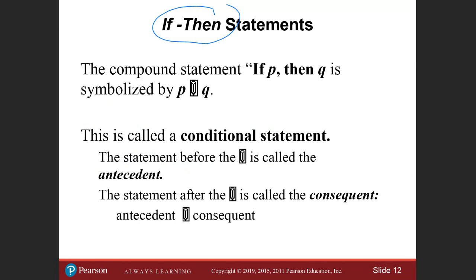So for the if then statement, it says the compound statement if P then Q is symbolized by the symbol here for if-then statement, the arrow pointing to the right. So there are two parts of the if then statement. We call this conditional statement. The statement before that is the antecedent. And the statement after the first statement would be the consequent. That's after the word then. So that should be the term used.